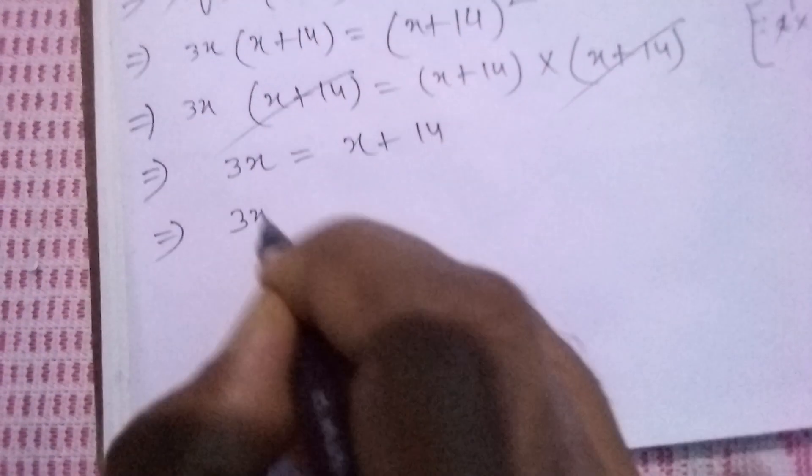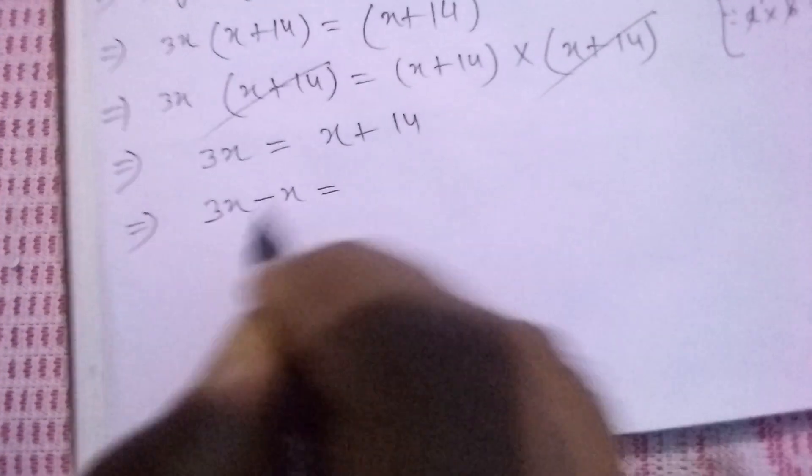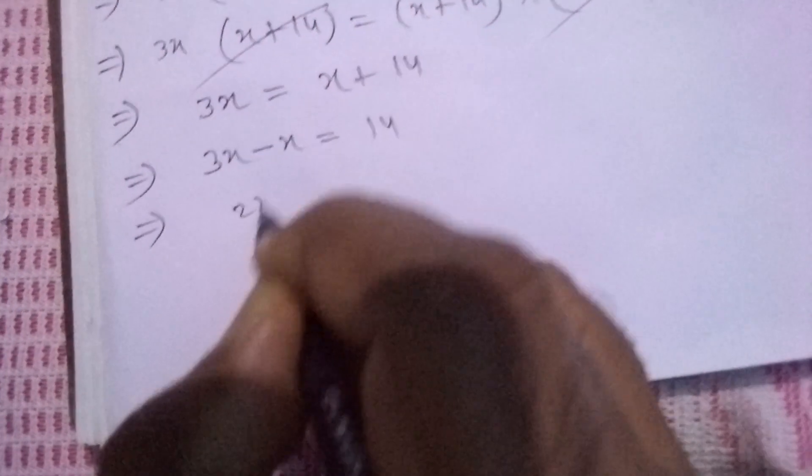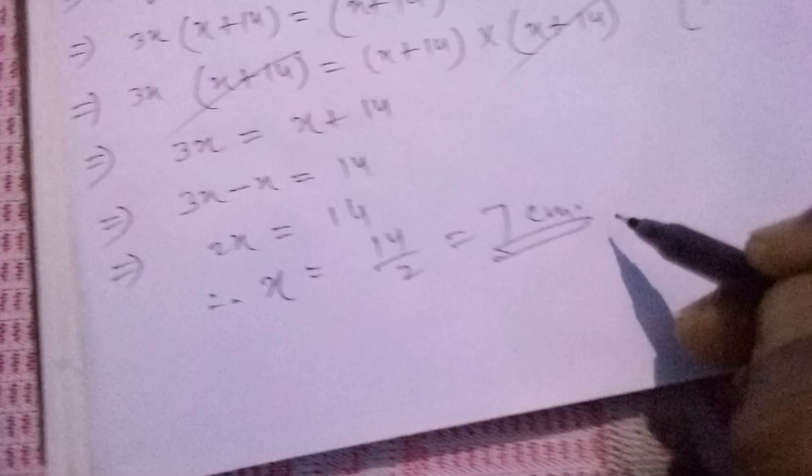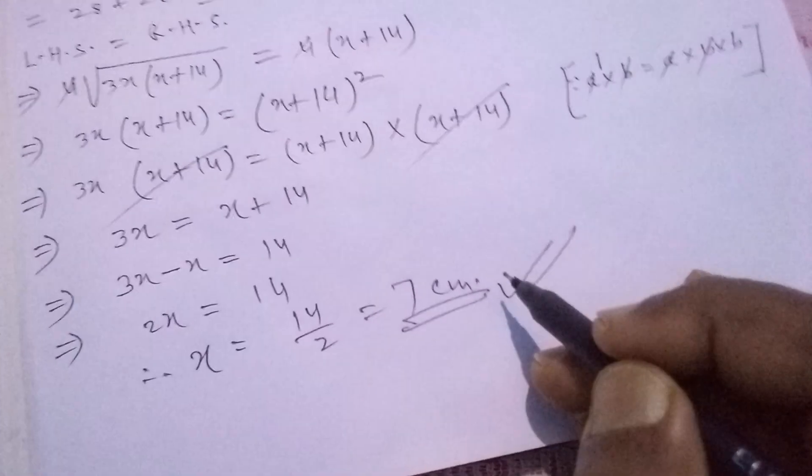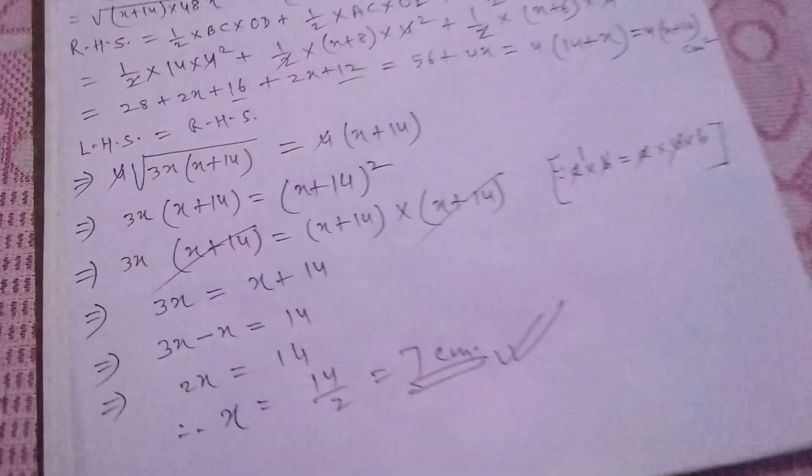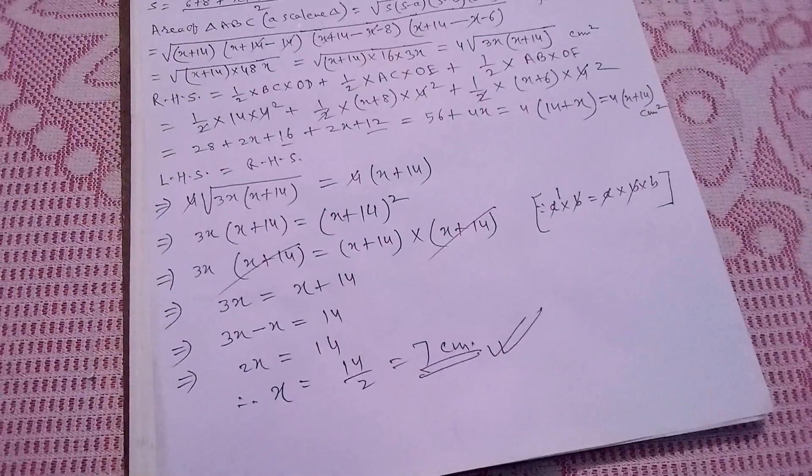Moving X to the left side: 2X equals 14, therefore X equals 14/2 equals 7cm. In this way we are getting the value of X. Thank you. If you like, please share and subscribe.